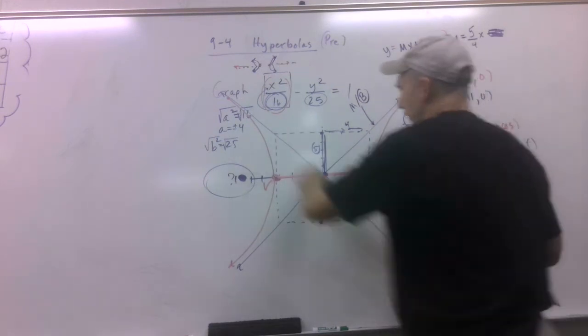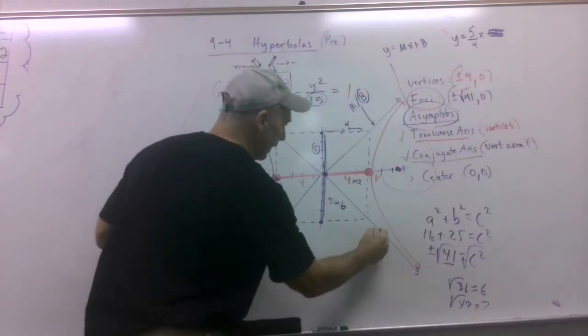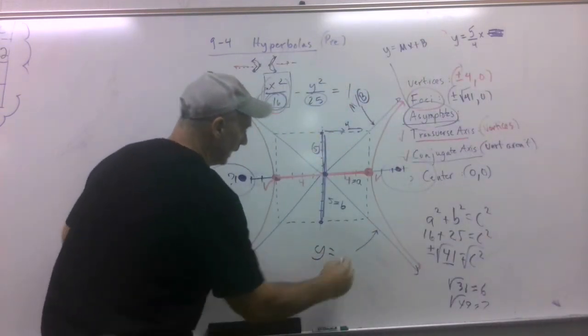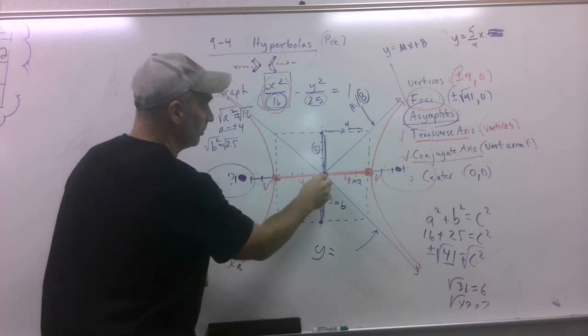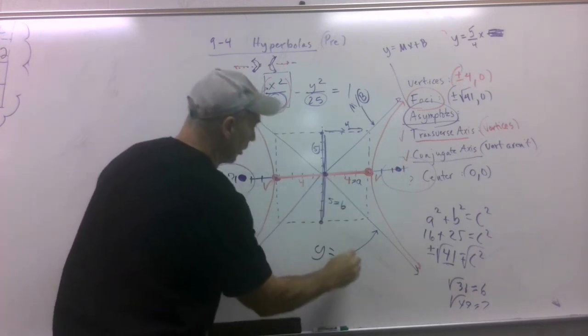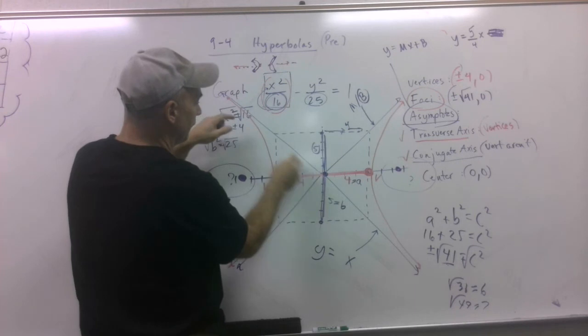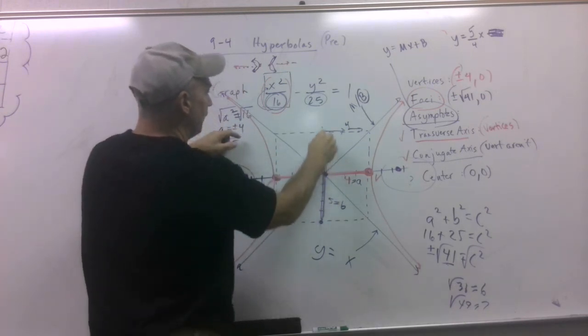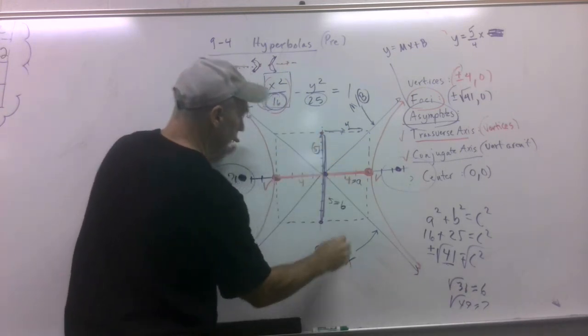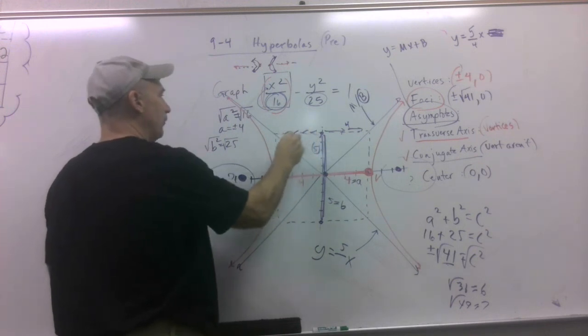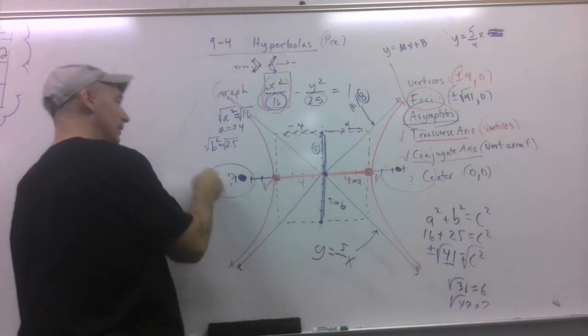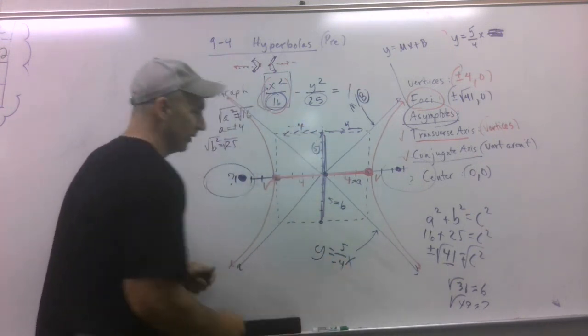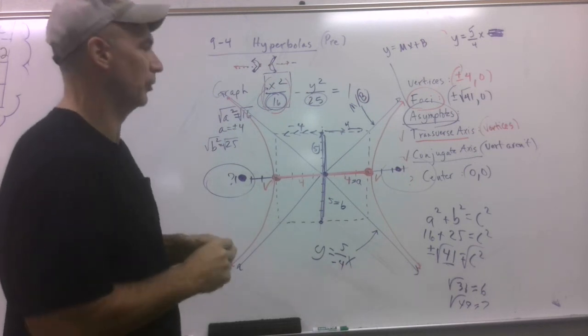What about the other one? Well, the other one right here, once again, I can see my y-intercept is 0. But I've got to figure out my slope. Well, this time, with this line, I've got to go up 5. So it's 5. But then I have to go left 4. Don't forget, left means negative. And there's the equation of the other asymptote.